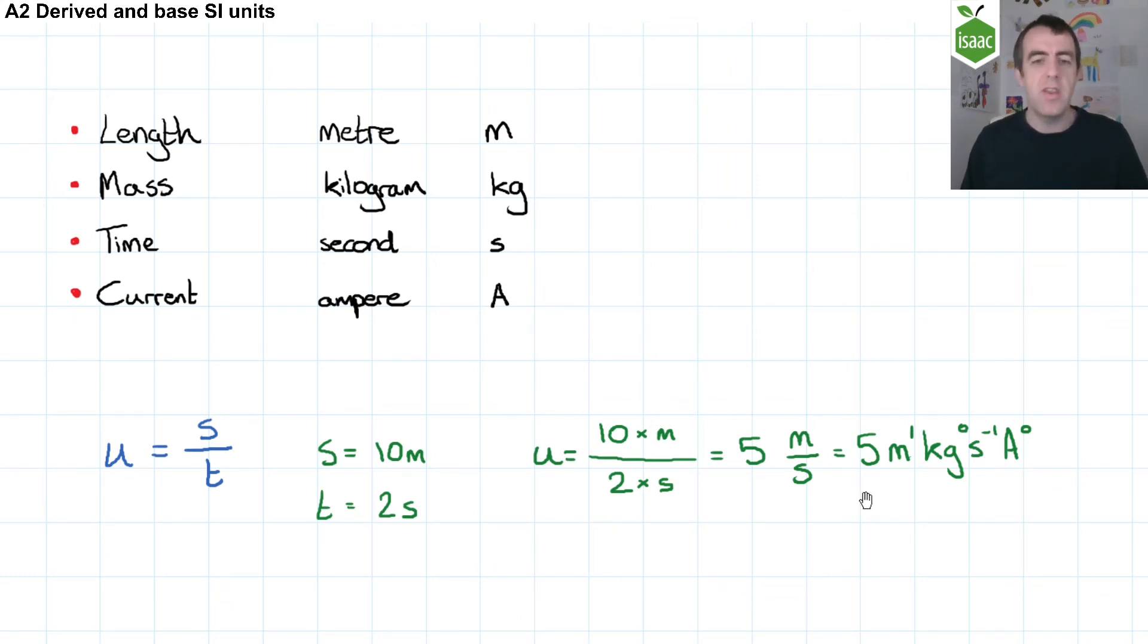Now, the steps that I took to decide what those powers were, I started by writing the simplest equation I could think of for a quantity. So if I were asked what the derived SI unit was for speed, I chose a very simple equation for speed. I was then able to substitute the units for the parts of that equation to determine what the unit is of speed in SI base units.